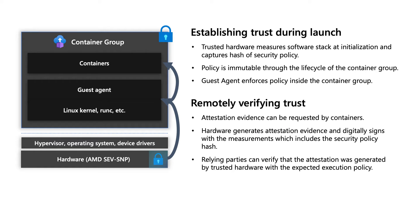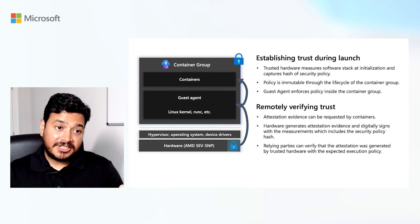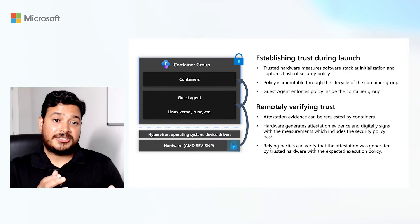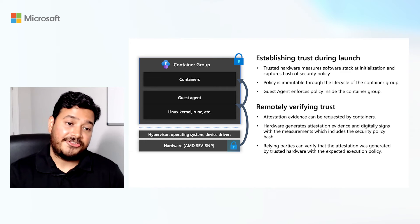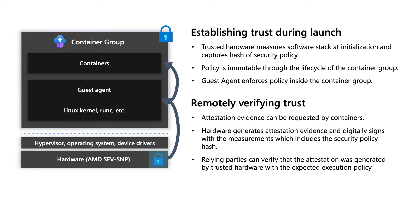So how exactly do we establish this trust during launch? The AMD SEV-SNP hardware measures the software stack being booted up in the container group and also captures the hash of the security policy from the deployment template, embedding it as an immutable field in the container group throughout its lifecycle. The guest agent enforces the policy inside the container group. Software running inside the container group can request the hardware for attestation evidence, which includes measurements of the container group along with the security policy being enforced. Relying parties can use services such as Microsoft Azure Attestation to verify they are talking to trusted hardware with the expected execution policy embedded in the host data field.